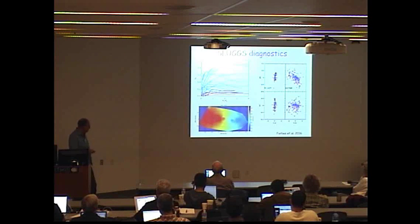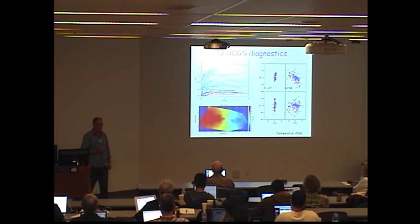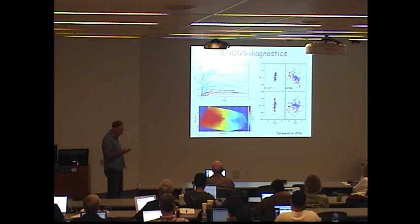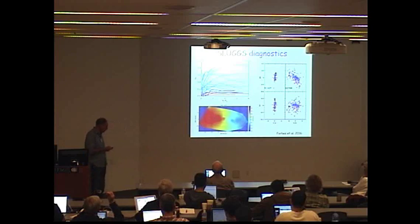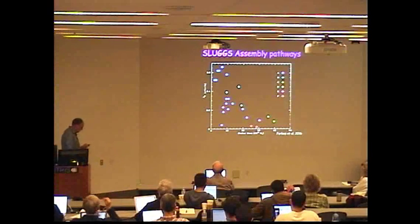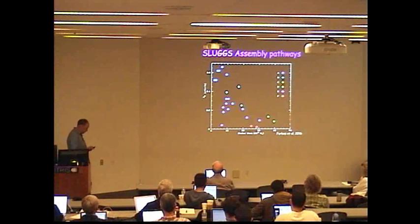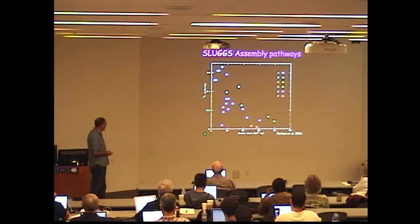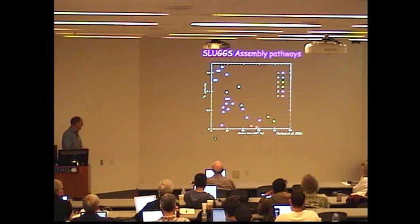We can also form h3 and h4 against v over sigma for our sample of galaxies and then we compare them with these kinematic predictions from the Thorsten Naab models. Here's a summary plot of what we found. I'm just showing lambda within one effective radius against the stellar mass of our galaxies.